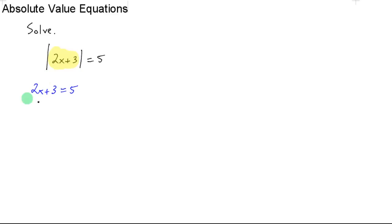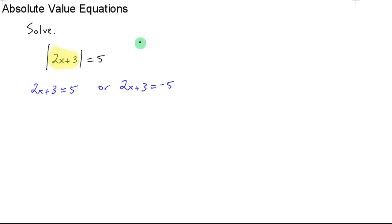Notice there's no absolute value in this step, so the yellow guy could be 5. Or what else can you take the absolute value of to get 5? You can take the absolute value of negative 5. If this yellow guy is 5, you have the absolute value of 5 equals 5, which is true. If the yellow guy is negative 5, you have the absolute value of negative 5 equals 5, and that's also true.